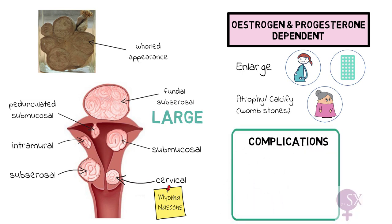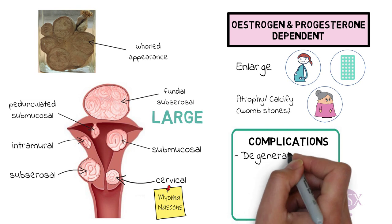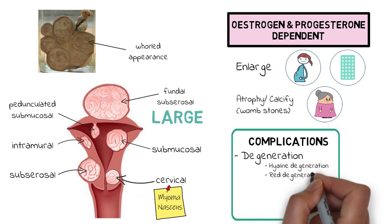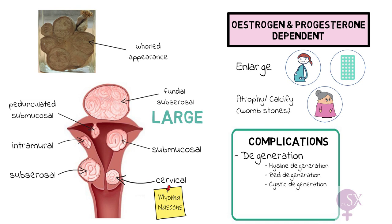There are a few complications of fibroids we need to know about. The first is degeneration, which occurs when there is inadequate blood supply to the fibroid. There are different types: hyaline degeneration is the most common type; red degeneration typically occurs in pregnancy, and patients will present with abdominal pain and bleeding; and there is also cystic degeneration. Another complication is the risk of malignancy — even though most of the time these tumors are benign, in less than 1% of cases they might become malignant, resulting in a leiomyosarcoma.